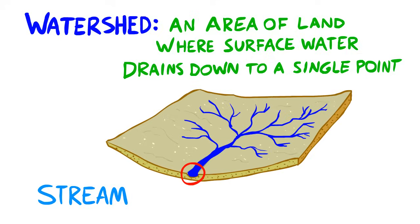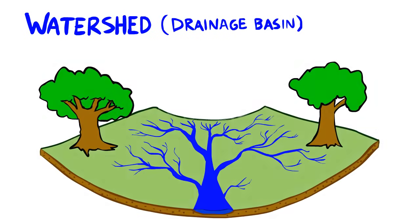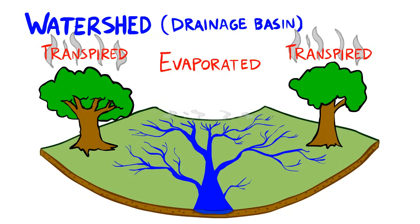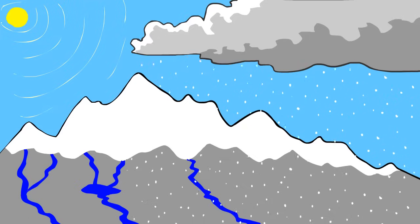A watershed, also called a drainage basin, collects all of the water that doesn't first get evaporated or transpired, whether it's from rain, snow and ice melt, sprinklers, spilt slushies, or even water.